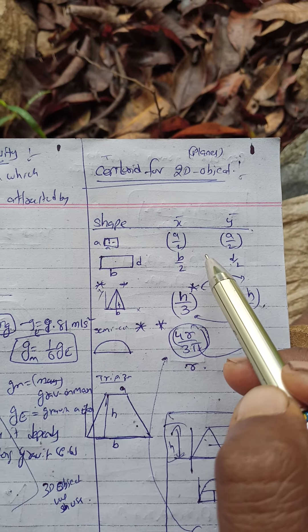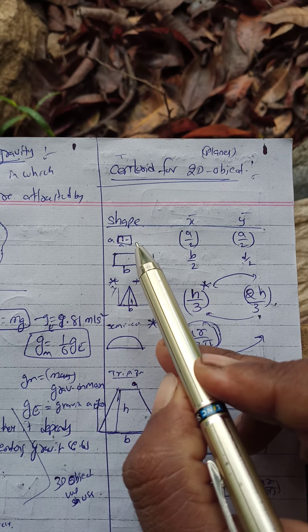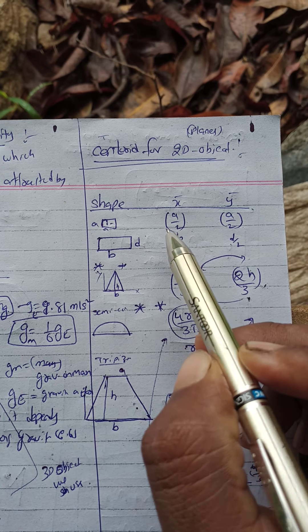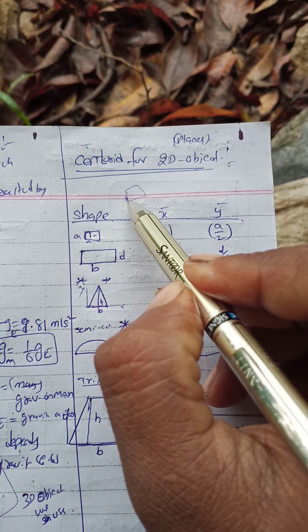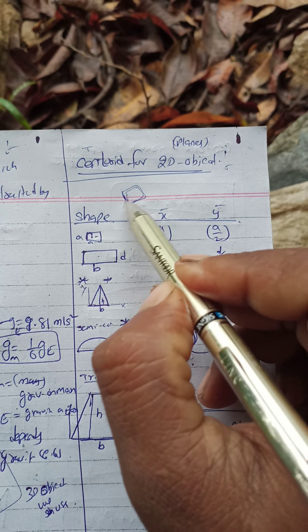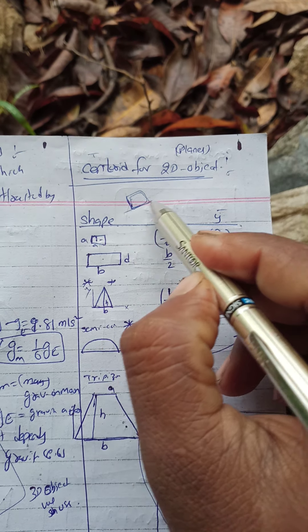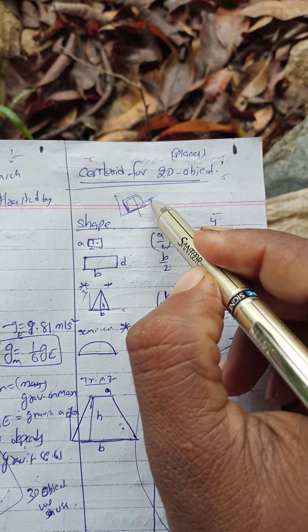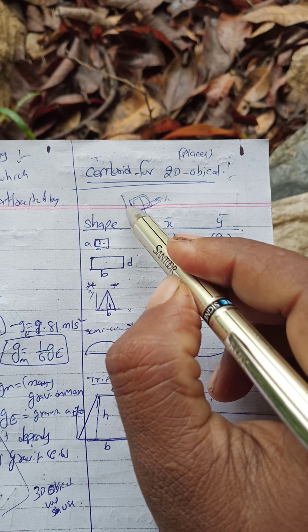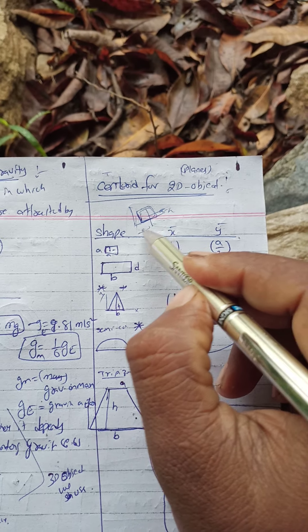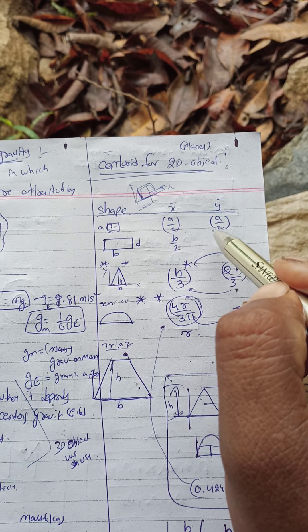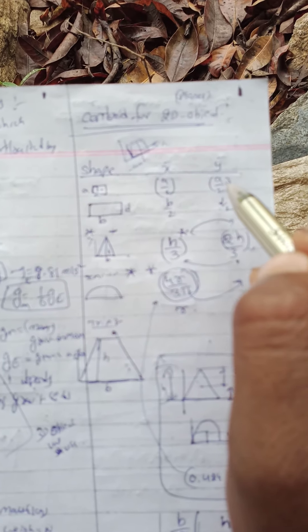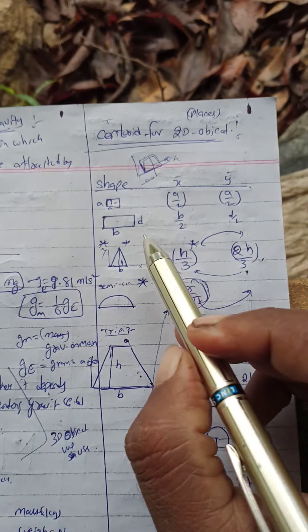For the x-bar and y-bar, if you take a square, on the x-axis it is a/2. This is a/2. So for a square, x-bar is a/2 and y-bar is also a/2.